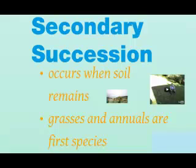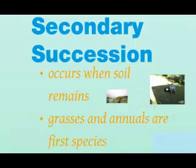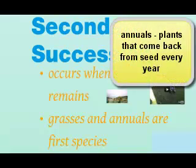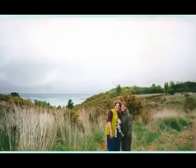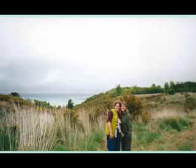Secondary succession happens a lot more quickly because even though there's been a disturbance, there's still soil there. This would be like after a fire, after you mow the lawn, or after you cut trees down in a forest — the soil remains and there may even be some plants still there. The first species to come back are grasses and annuals, which are plants that grow new every year from seed. In this picture you can see secondary succession where the original trees have been cleared; in the background you can see grasses, shrubs, and even a few young trees forming.